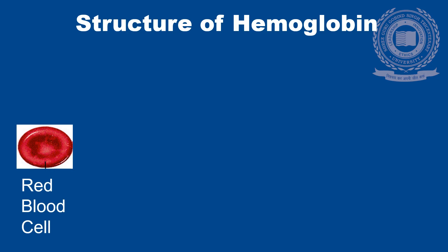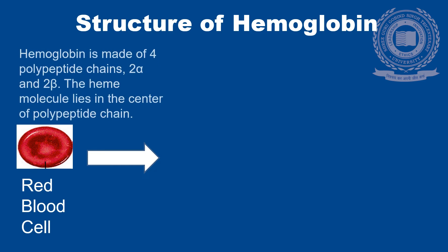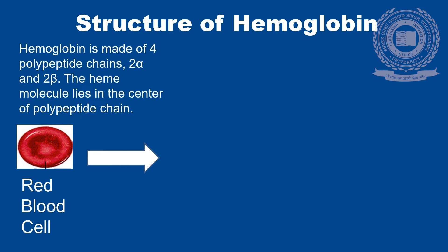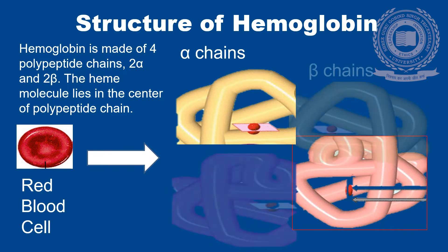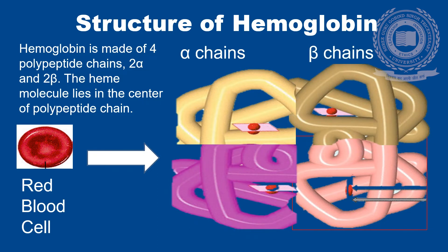Structure of Hemoglobin. Hemoglobin is made up of four polypeptide chains — two alpha chains and two beta chains — and in the center of the polypeptide chain is present the heme molecule.